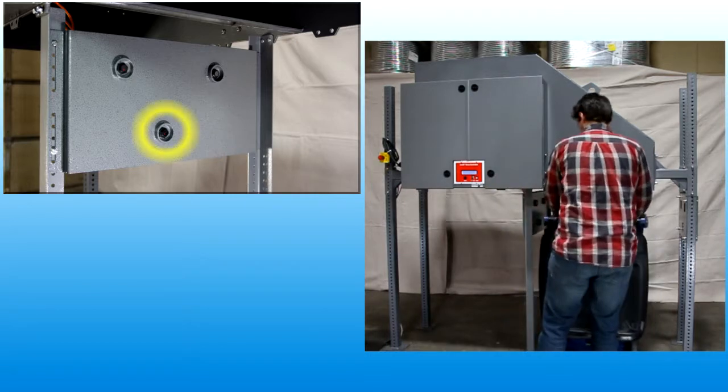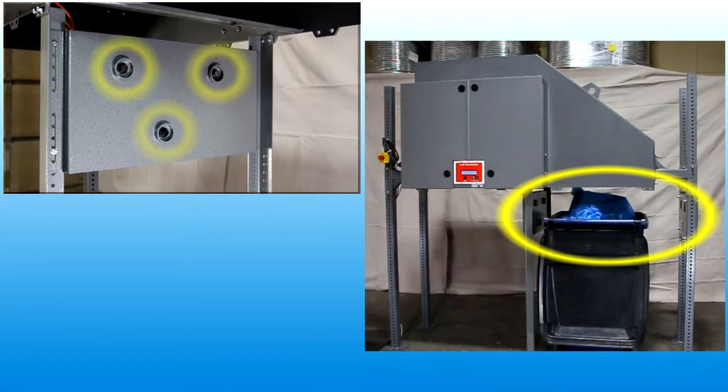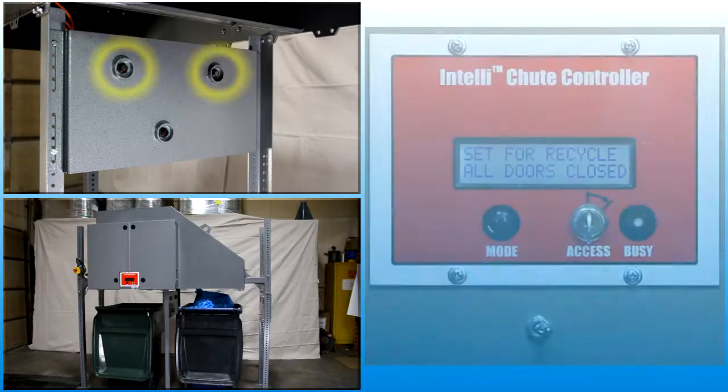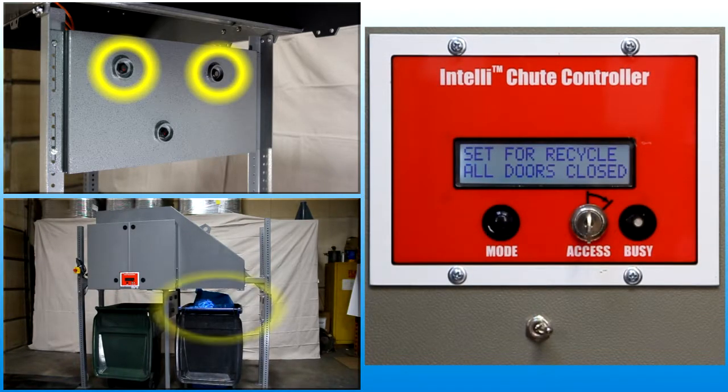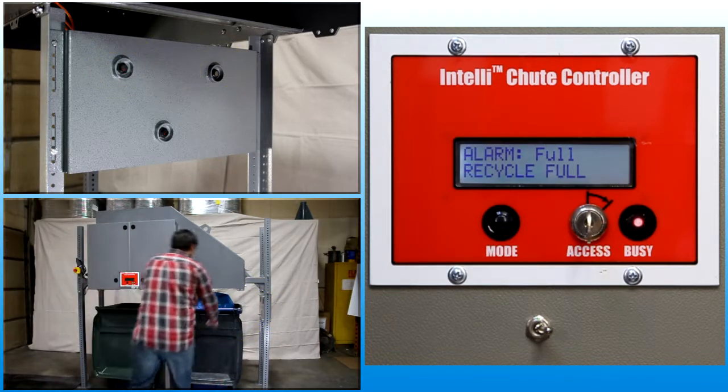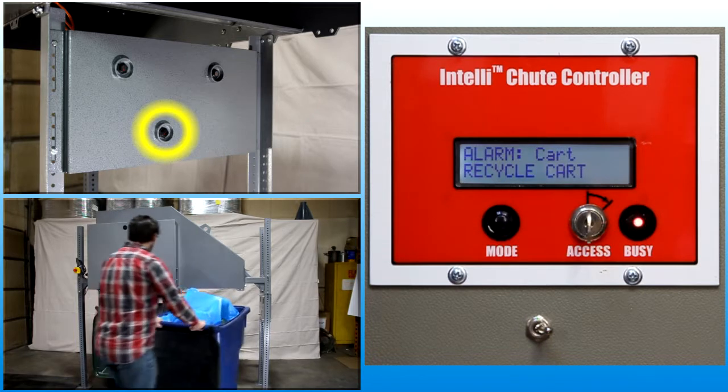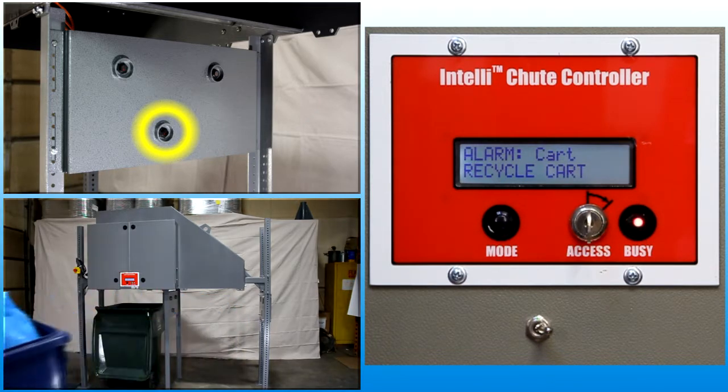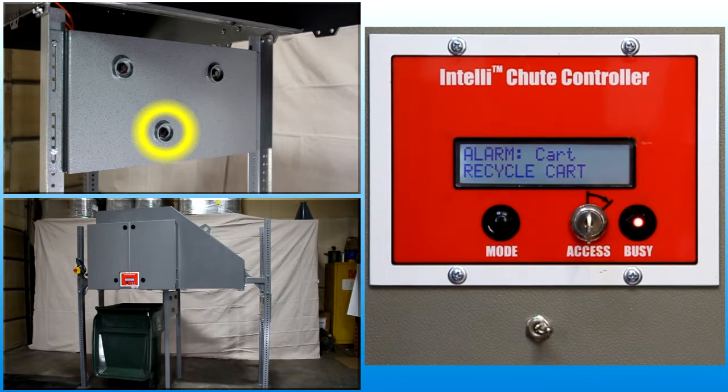Optional cart sensors detect the presence of the cart and status of the cart contents. When a cart full condition is detected, the control system will generate a cart full warning message. When a cart is removed or not present, the control system generates a cart warning message and locks out the chute system.